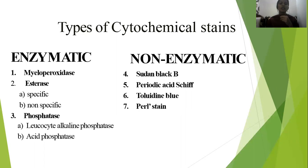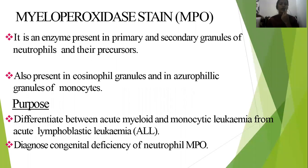The non-enzymatic types of cytochemical stains include Sudan black B, periodic acid-Schiff (PAS), toluidine blue, and Perls stain. That concludes the overview of cytochemistry.